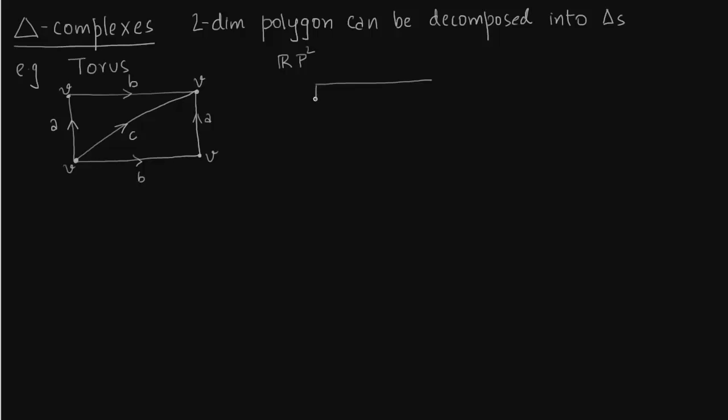Similarly with projective plane, real projective plane RP2. RP2 will have two vertices, V and W. We triangulate it or cut it along the diagonal. We properly orient the edges.